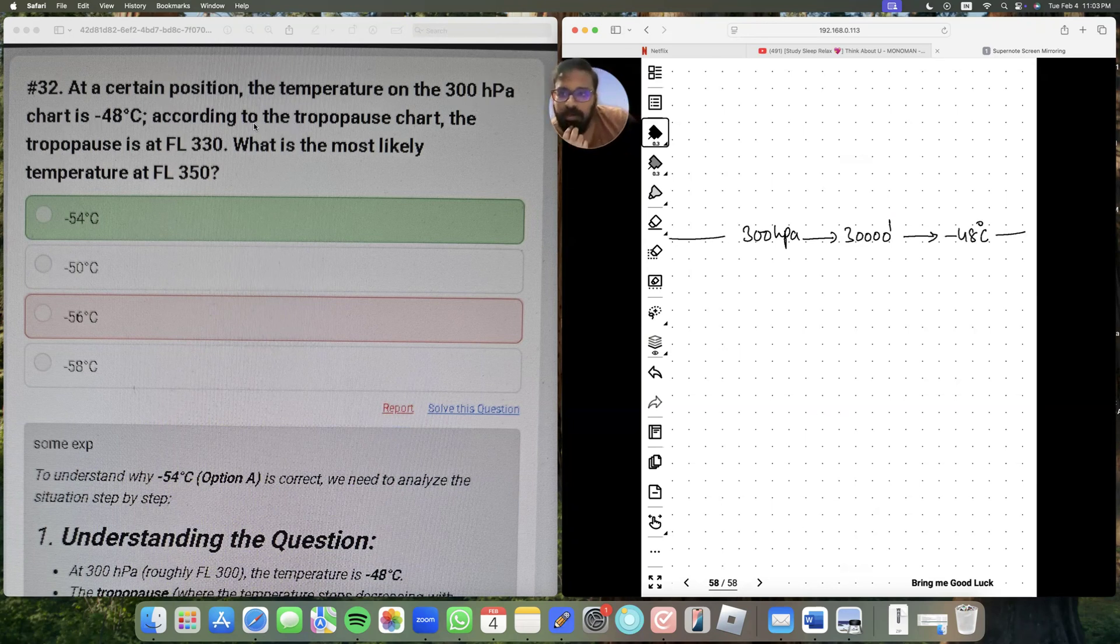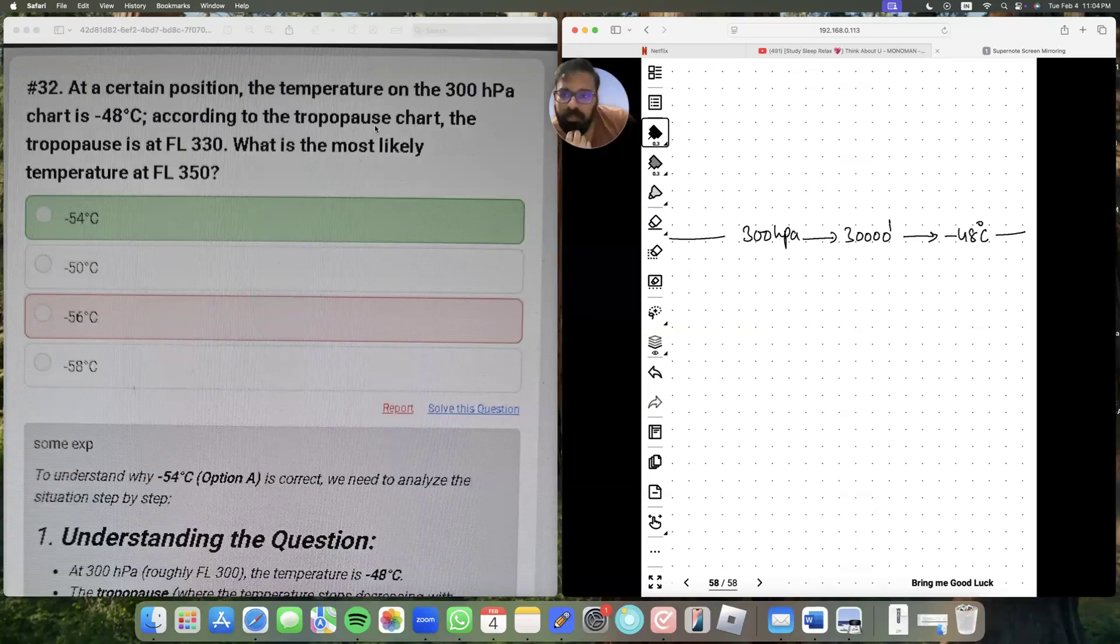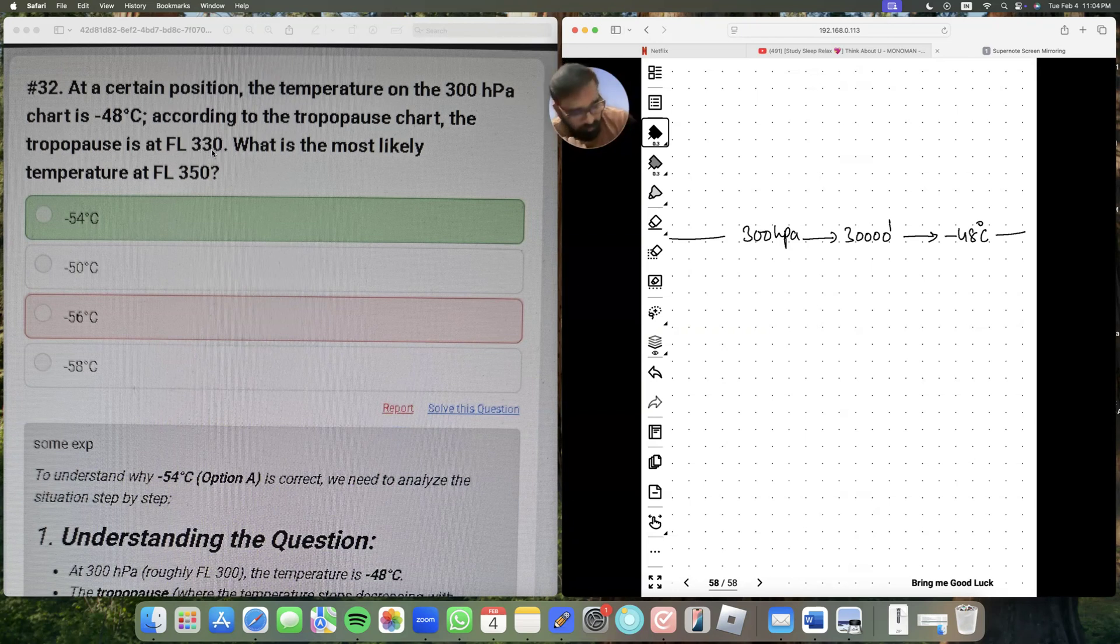Now it says, according to this chart, tropopause level is at flight level 330. That means at a level of 33,000 feet - FL330 plus two zeros is 33,000 feet. This is tropopause.